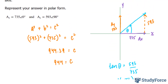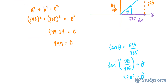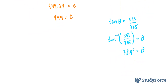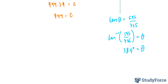Remember, they ask us to represent our answer in polar form. So in polar form it looks like this: 944 at an angle of 38.9 degrees.